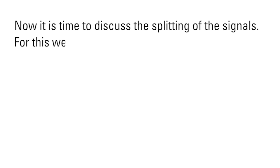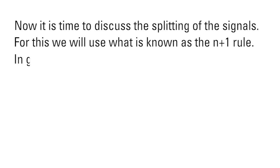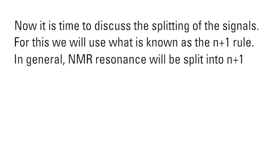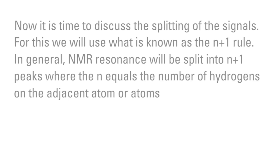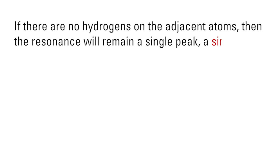Now it is time to discuss the splitting of the signals. For this, we will use what is known as the n plus 1 rule. In general, NMR resonance will be split into n plus 1 peaks where n equals the number of hydrogens on the adjacent atom or atoms. If there are no hydrogens on the adjacent atoms, then the resonance will remain a single peak, a singlet.